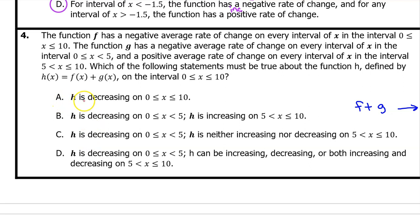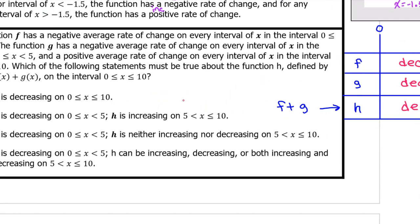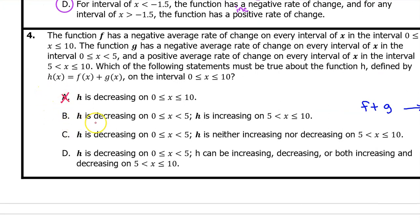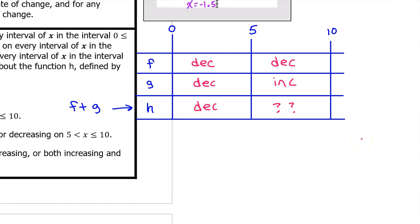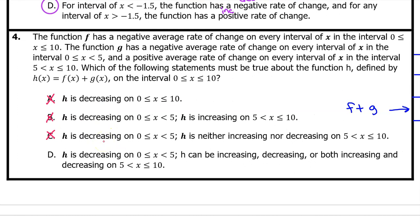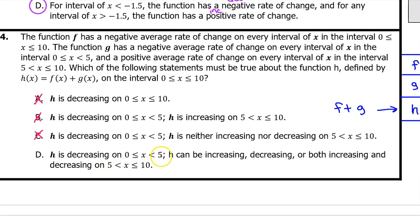Option A says h is decreasing on the entire interval from 0 to 10 — we don't know what's happening from 5 to 10, so A cannot be the answer. Option B says h is decreasing from 0 to 5 and increasing from 5 to 10 — we don't know what's happening from 5 to 10, so B cannot be the answer. Option C says h is neither increasing nor decreasing from 5 to 10 — we don't know that either. Option D says h is decreasing from 0 to 5 and can be increasing, decreasing, or both from 5 to 10. In other words, we just don't know — the answer is D.